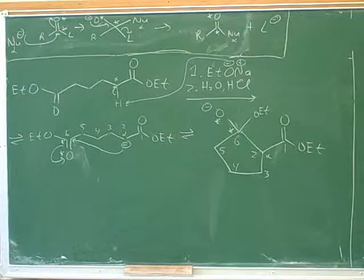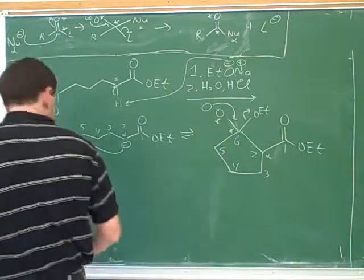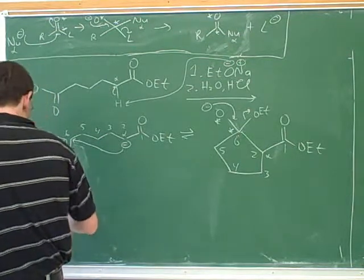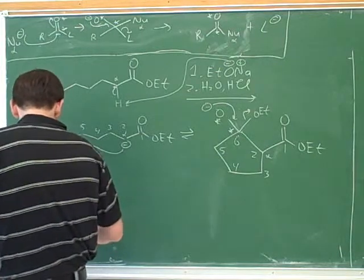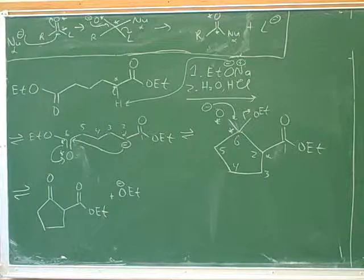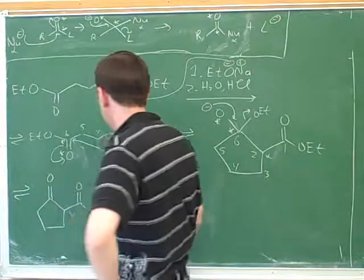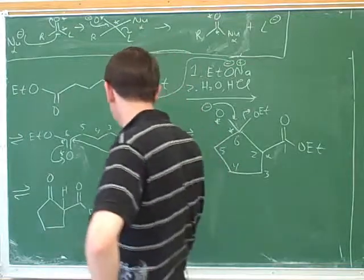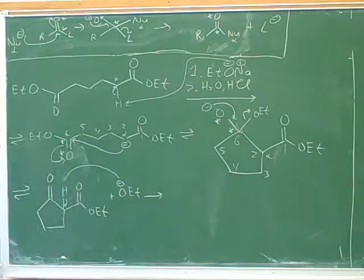It looks like you've gone ahead to the next step — that looks good. So who is it that's going to take this alpha hydrogen? The leaving group that just left now takes the alpha hydrogen. This is not a new reagent; it's just something that was produced as part of the mechanism. And this is the one step that is not an equilibrium step. This goes to completion and drives the reaction along.